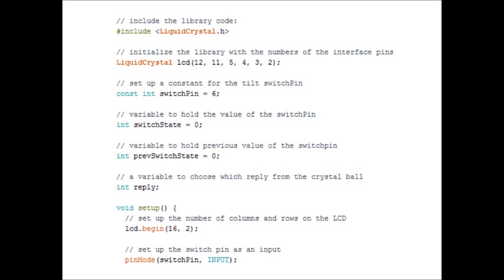We've done two things. We've given a name LCD and we have declared what pins it's attached to on our Arduino. Now that we've set up the library it's time to create some variables and constants. Create a constant to hold the pin of the switch pin, a variable for the current state of the switch, a variable for the previous state of the switch and one more to choose which reply the screen will show. So constant int switch pin equals six, int switch state equals naught, int previous switch state equals naught, and int reply.